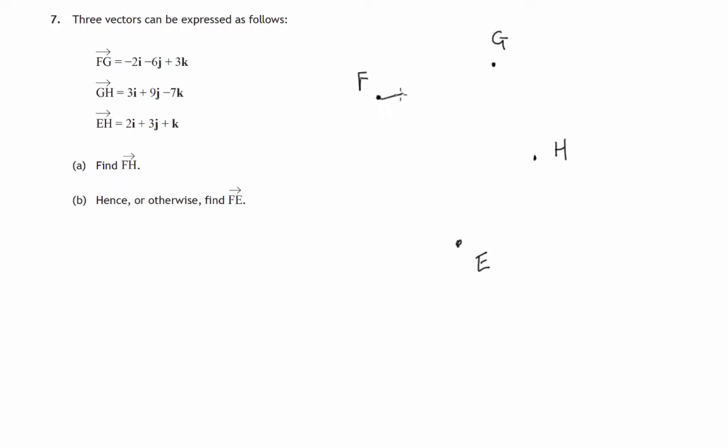So we have a journey from F to G whose components are (-2, -6, 3). Then we have a journey G to H with components (3, 9, -7), and then finally a journey from E to H with components (2, 3, 1).